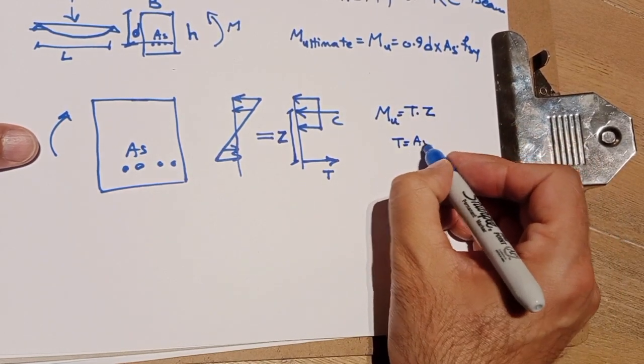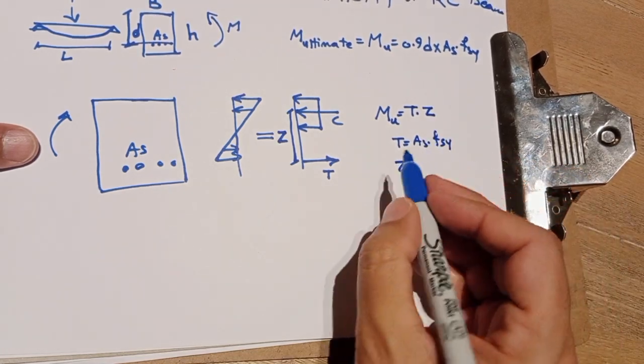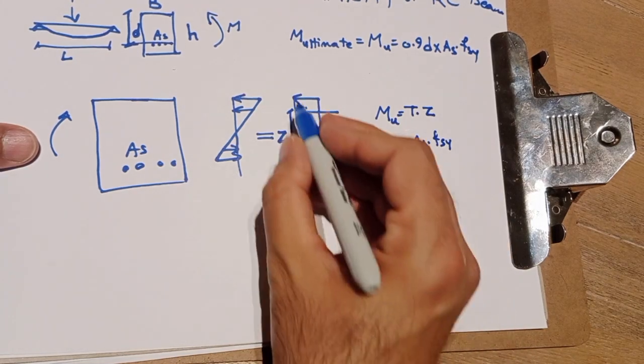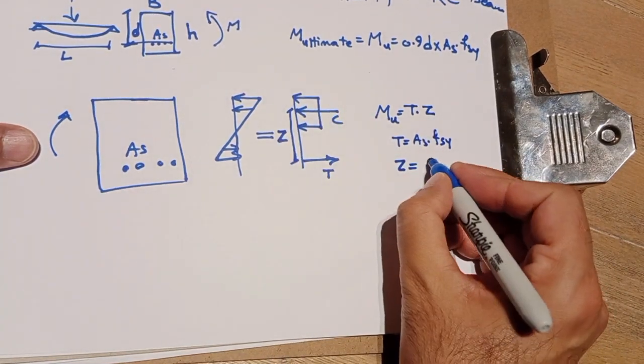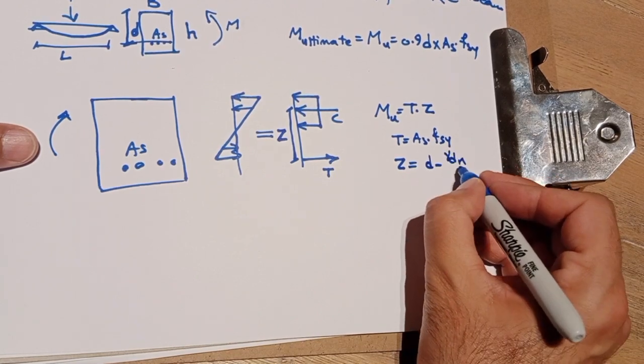T is As times fsy. And Z is distance between this tension to compression, that is d minus half gamma dn.